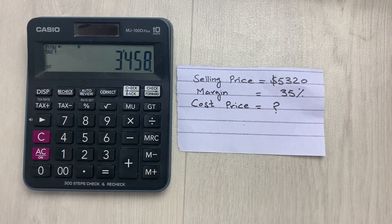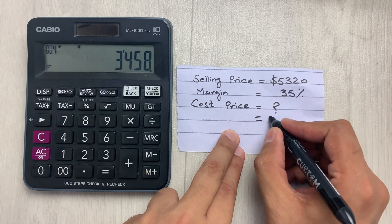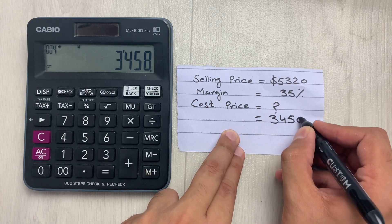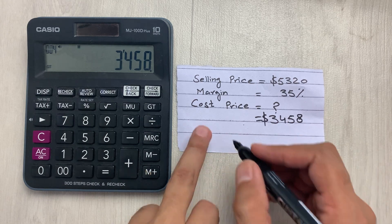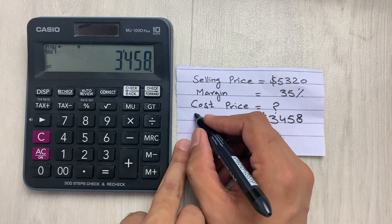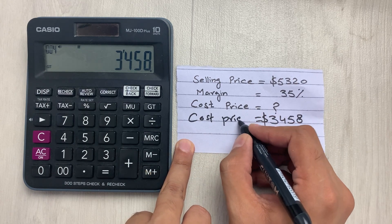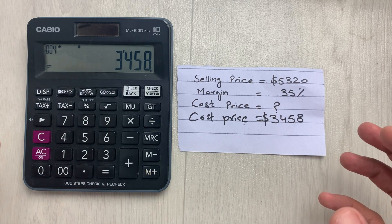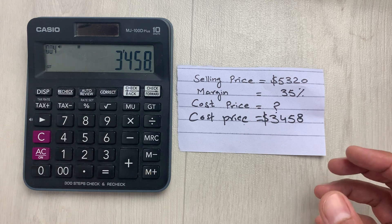Here is the final answer — $3,458 will be the cost price of that item. So this is how we can find out the cost price on calculator. Guys, this is it for today's video, please like this video and please subscribe to my channel. Thank you very much.